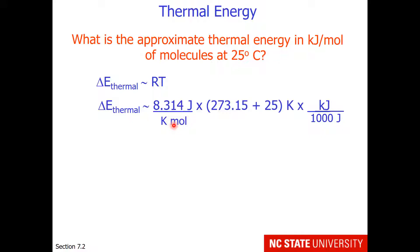So we will just take the ideal gas law constant, 8.314 joules per Kelvin mole, multiply it by the temperature, which has been adjusted to degrees Kelvin, and then divide by 1,000 joules to convert this into kilojoules. So you notice how all our units cancel out and we're left with a value of approximately 2.5 kilojoules per mole.